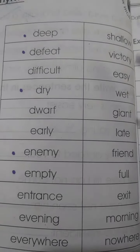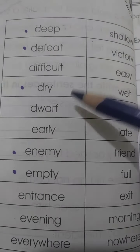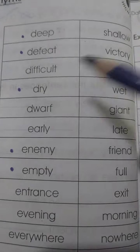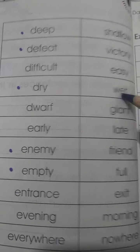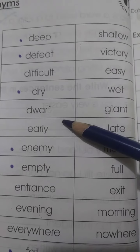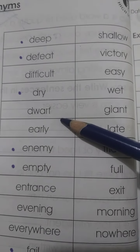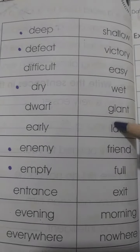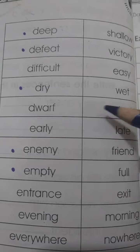'Difficult' — muskil. Antonym is 'easy' — asan. 'Dry' — sukhah hua. Antonym is 'wet' — gila. 'Dwarf' — chhote katka joh insaan hoata hai, a very small person. Antonym is 'giant' — joh ke bhoat bade katka insaan hoata hai, a very large person.